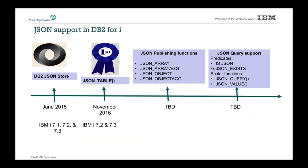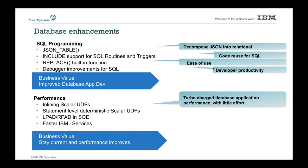In November, we're continuing our roadmap for JSON support. In June of last year we delivered our DB2 JSON store. In November of this year we're delivering JSON_TABLE. We'll be looking at publishing features and query support in future TRs. The big item for this TR is JSON_TABLE, plus we also added support for INCLUDE support for SQL routines and triggers, a REPLACE built-in function, and improvements to the debugger.